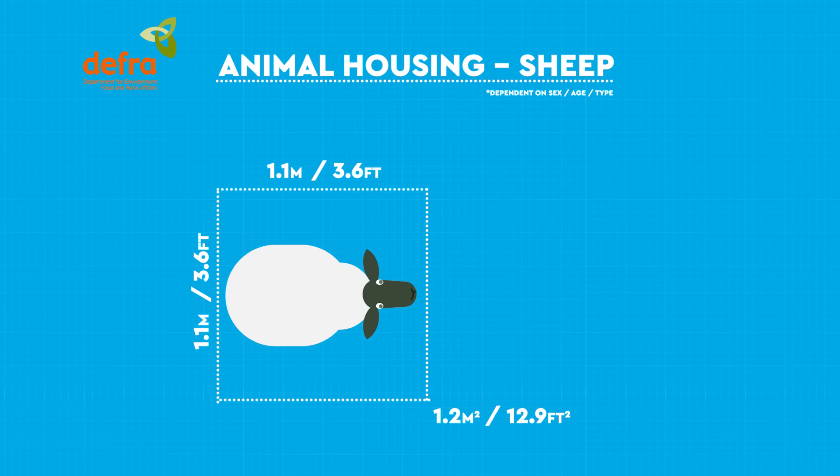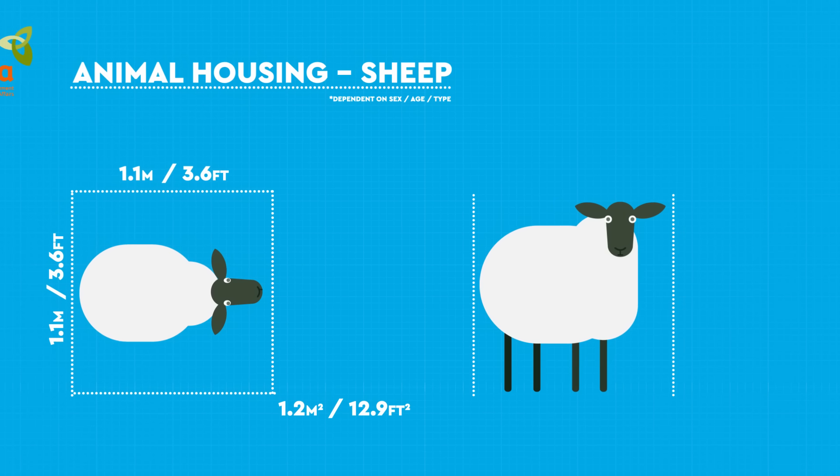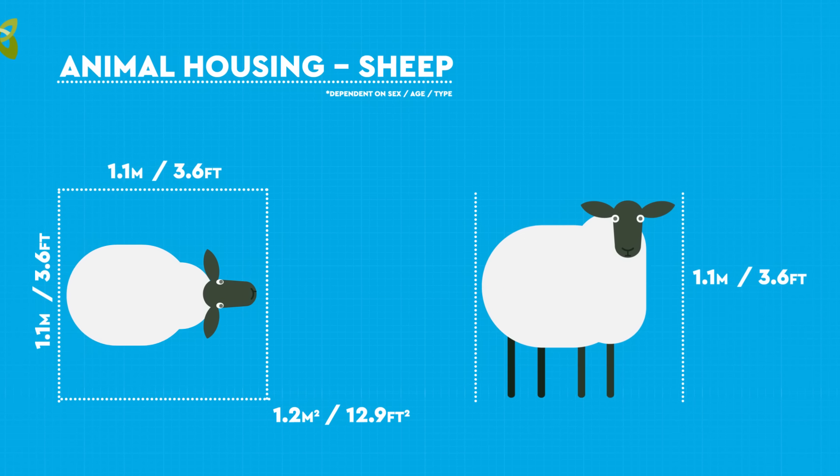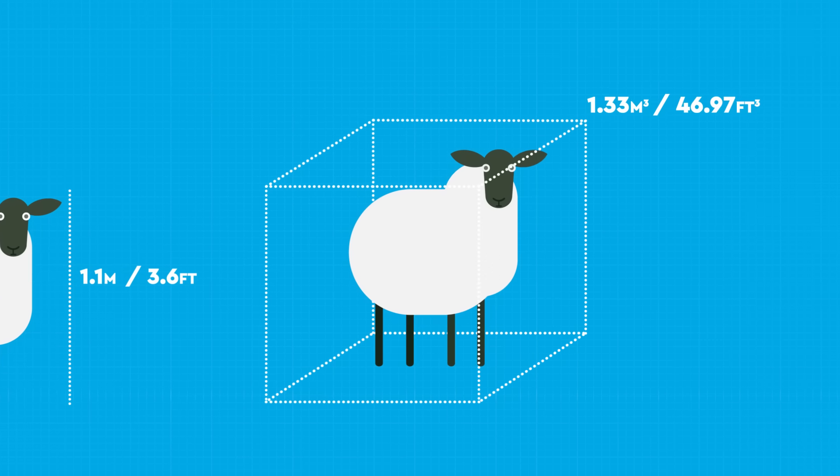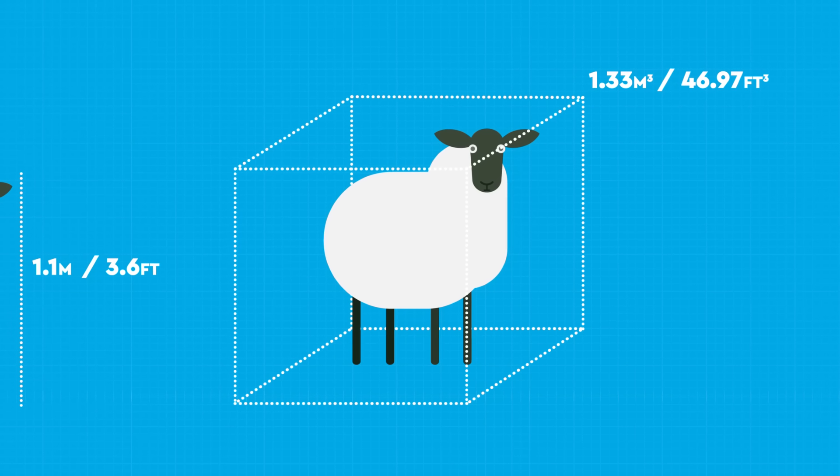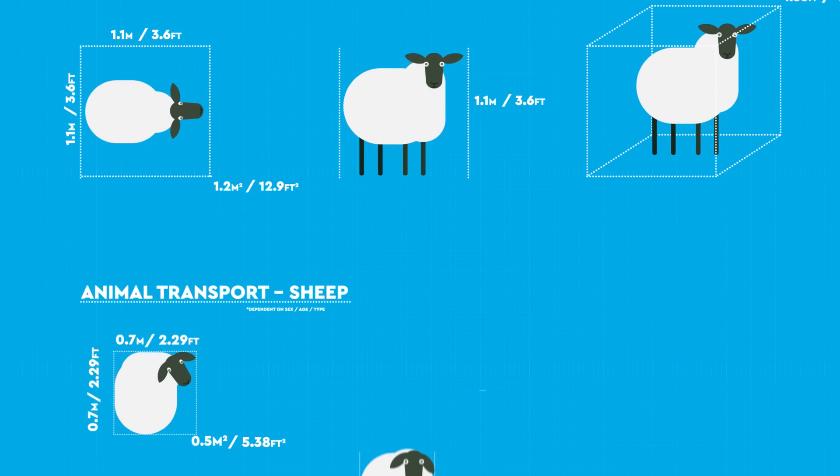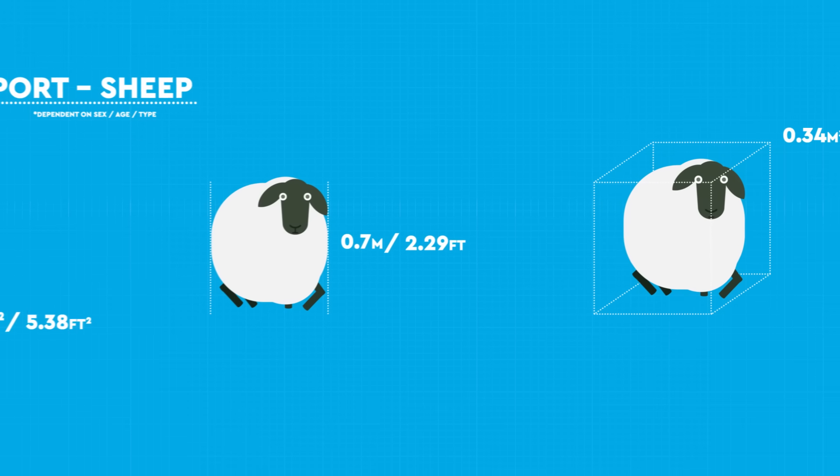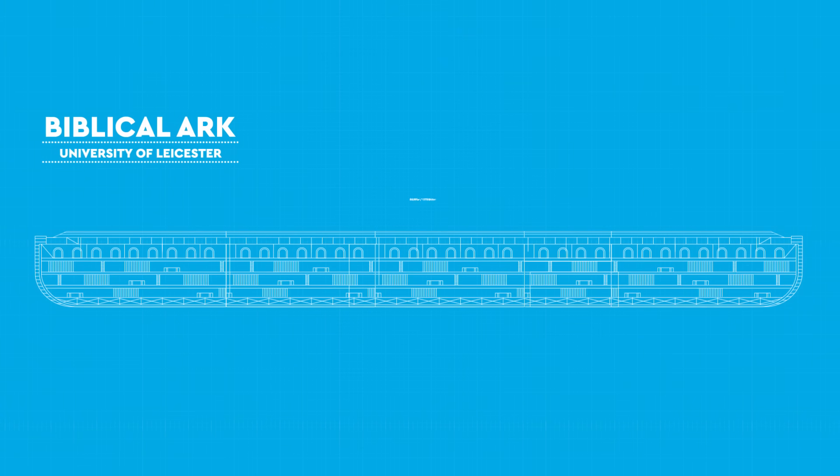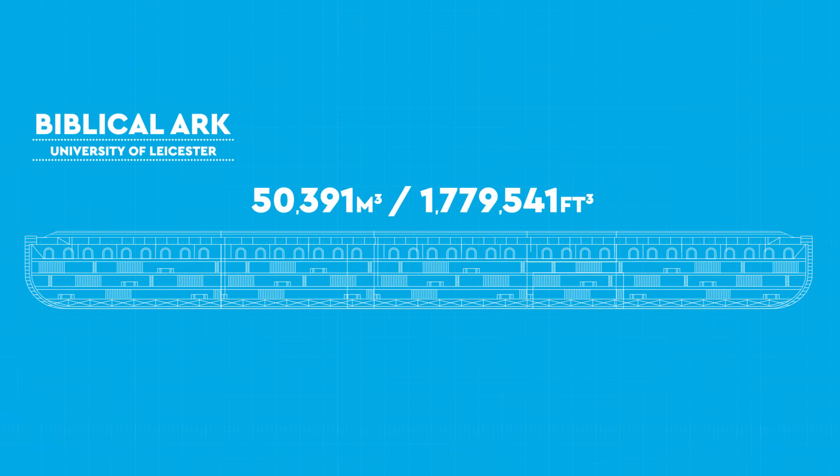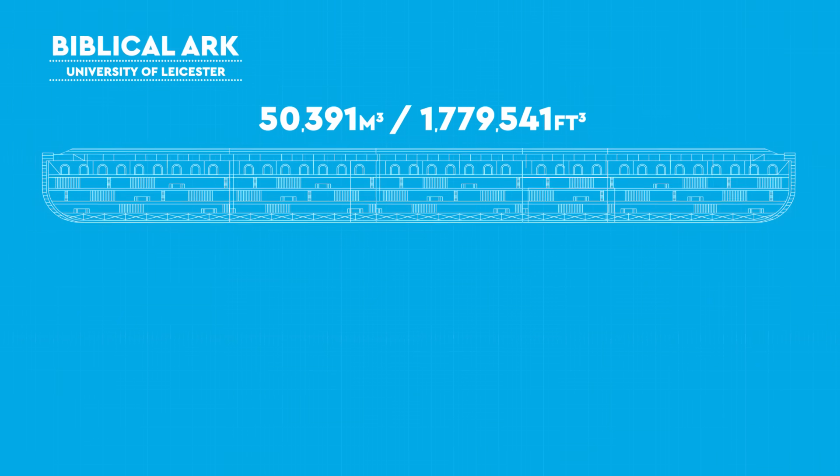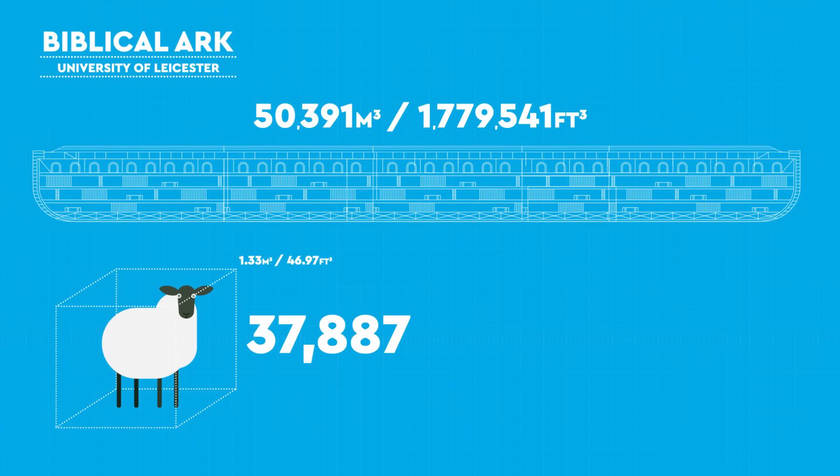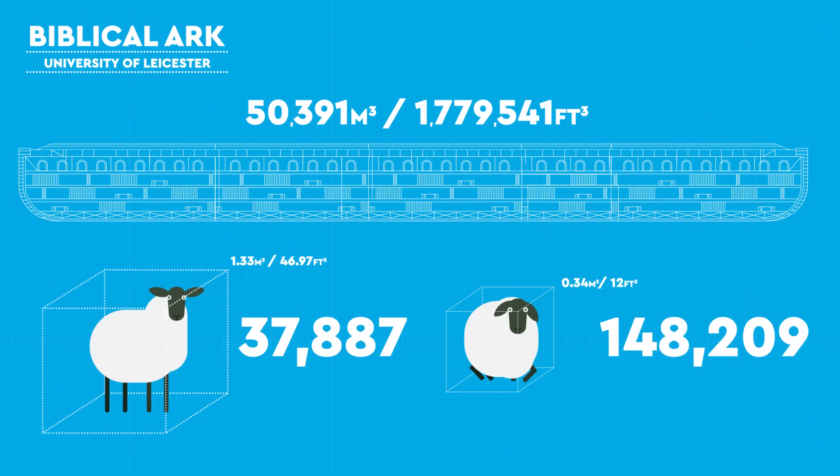According to official UK guidance, the space a sheep should have is around 1.2 square meters or 12.9 square feet. Plus they'll need a bit of room to stand up in, again to keep things simple and to make it a cube, let's say 1.1 meters or 3.6 feet. That means the space required to house a sheep on the ark is about 1.33 cubic meters or 46.97 cubic feet. In transport, that space is lower, at 0.5 square meters or 5.38 square feet per animal. We'll say 0.34 cubic meters or 12 cubic feet. The hypothetical ark put forward by Leicester University had a capacity of just over 50,391 cubic meters. That's just under 1.8 million cubic feet. Or in animal terms, 37,887 sheep living in comfort or 148,209 sheep crammed in transport style.